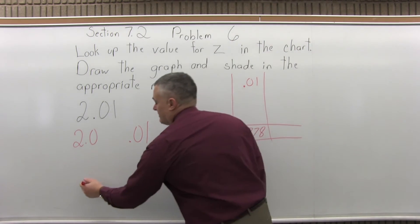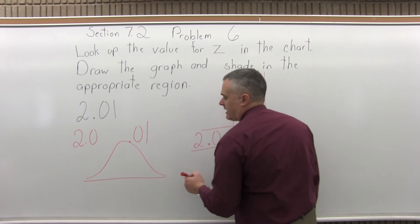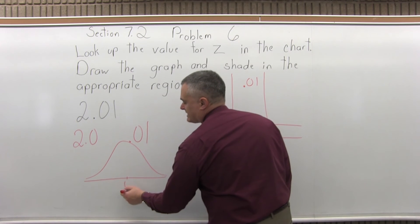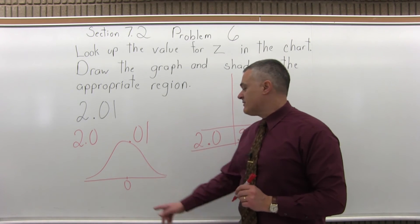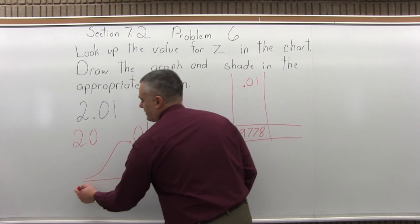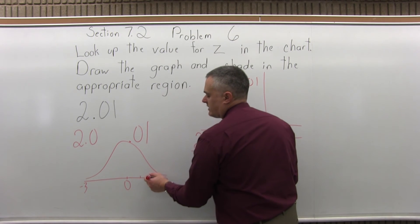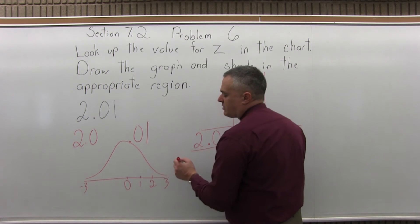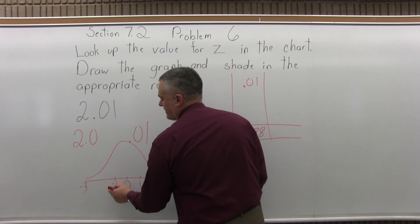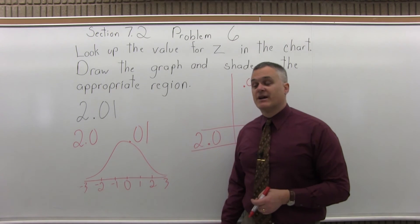So what that means is we've taken the bell curve and you can write it so that it has some numbers underneath. Underneath the very center we'll put a 0. On the far right side we'll put a 3. On the far left we'll put a negative 3. And then we split up positive 1, positive 2, positive 3 on the right, and then on the left negative 1, negative 2, negative 3. And these numbers represent how many standard deviations you are away from the average value.